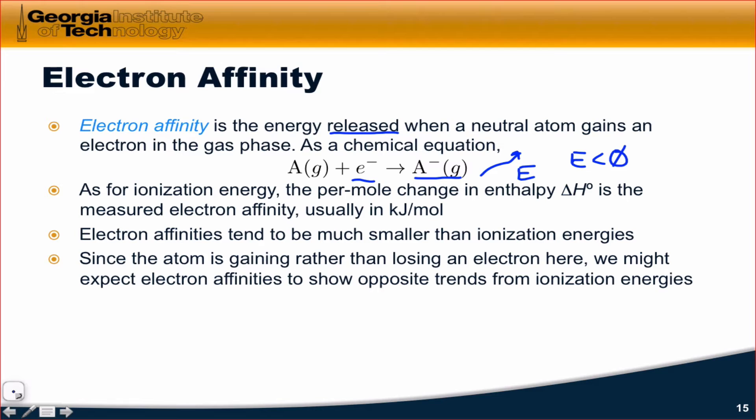Like ionization energy, electron affinity is typically measured on a per mole basis in kilojoules per mole of atoms to which we add an electron. And what we find is that electron affinities tend to be much smaller than ionization energies.